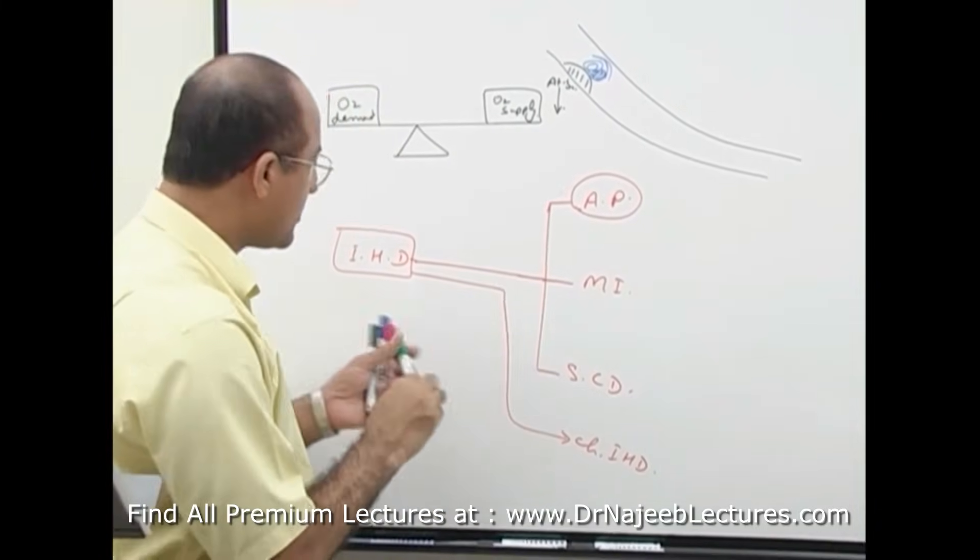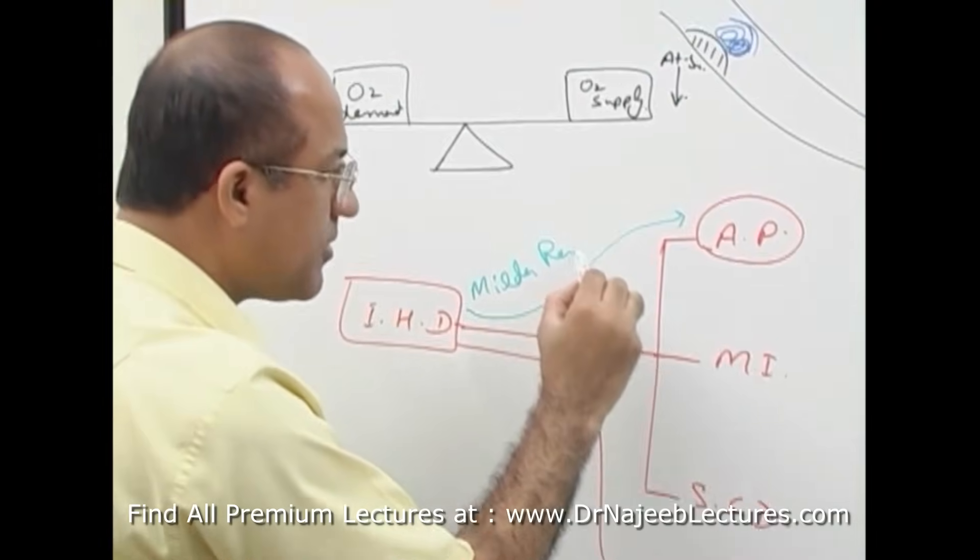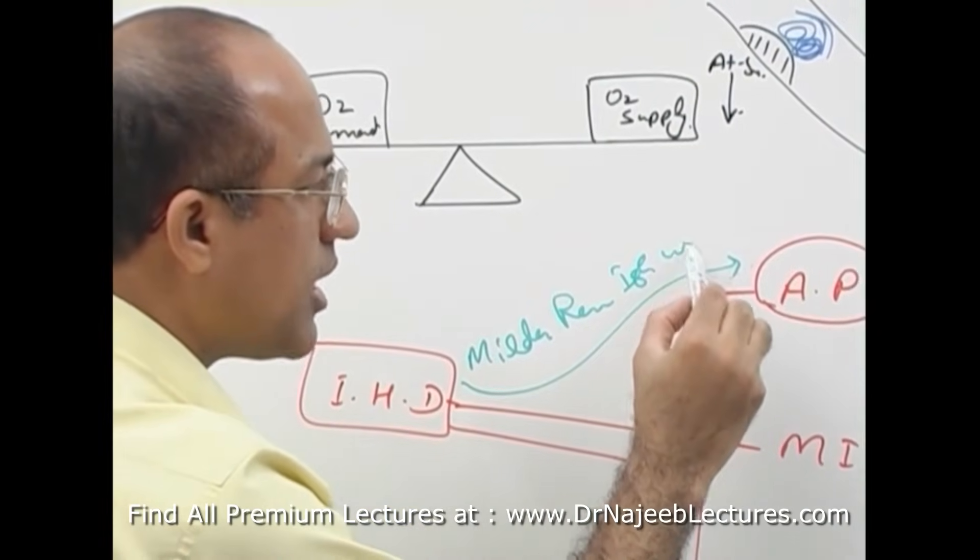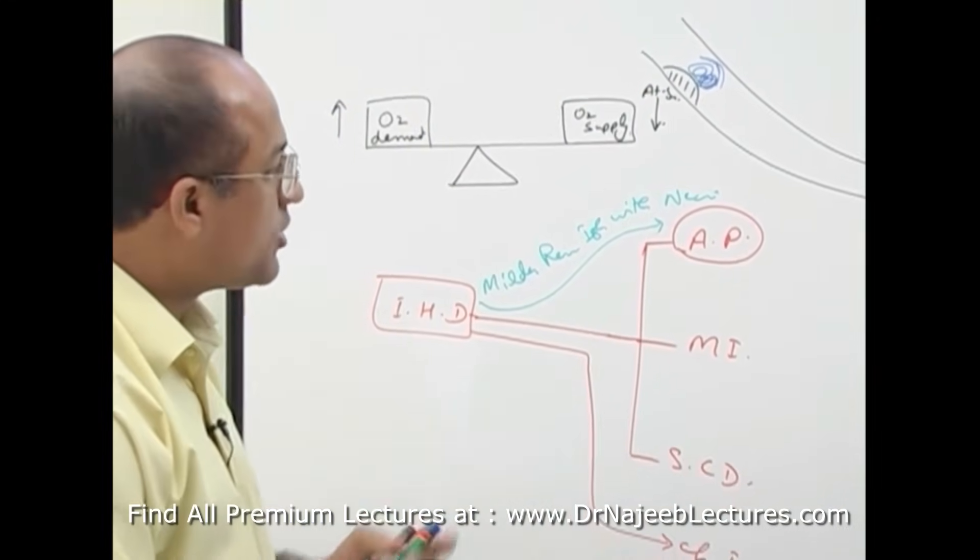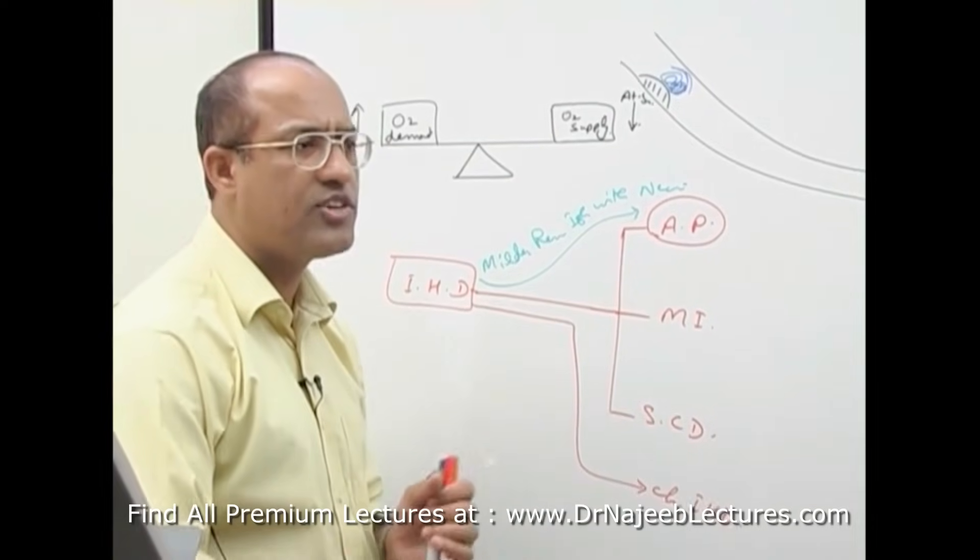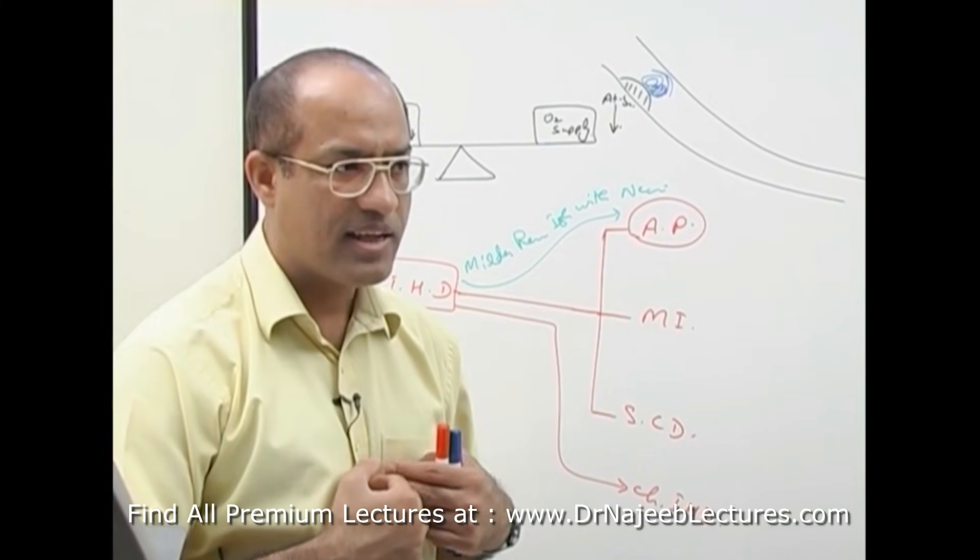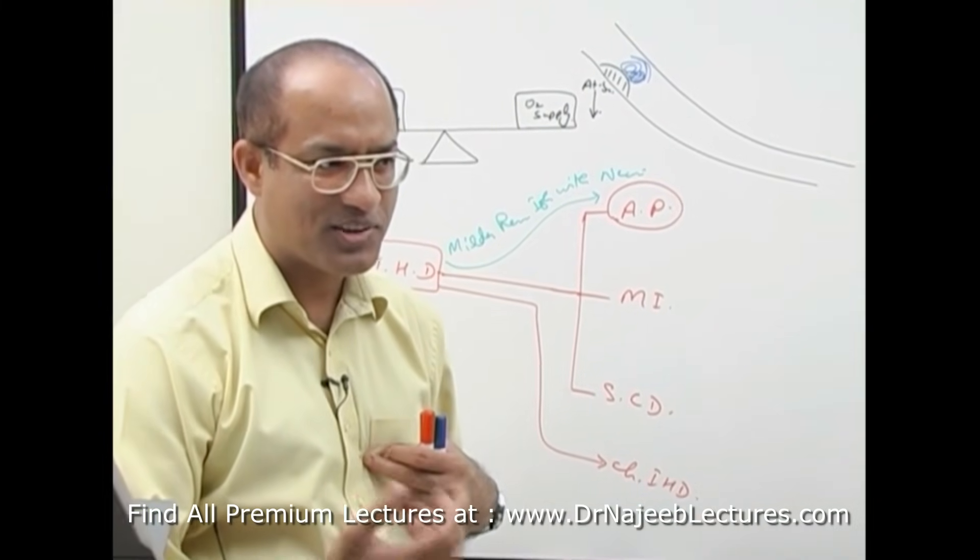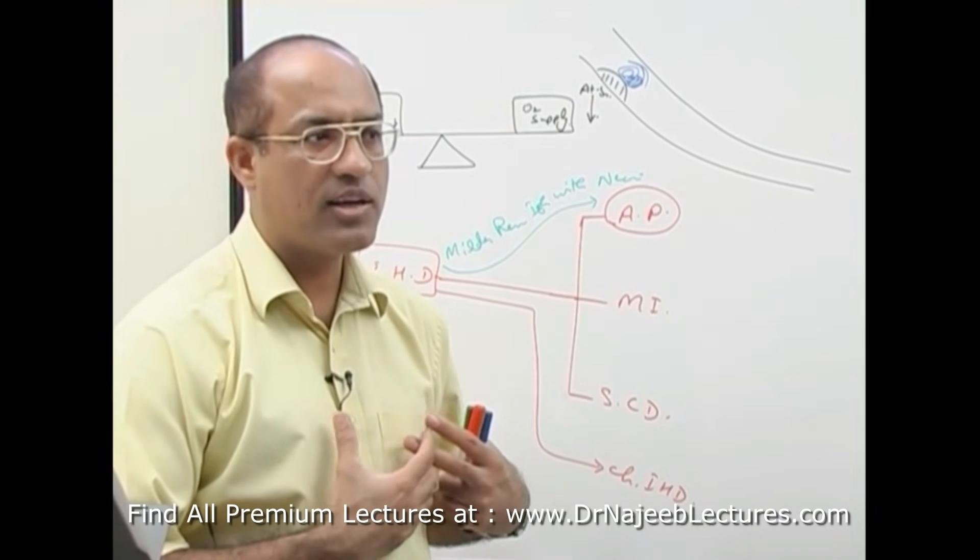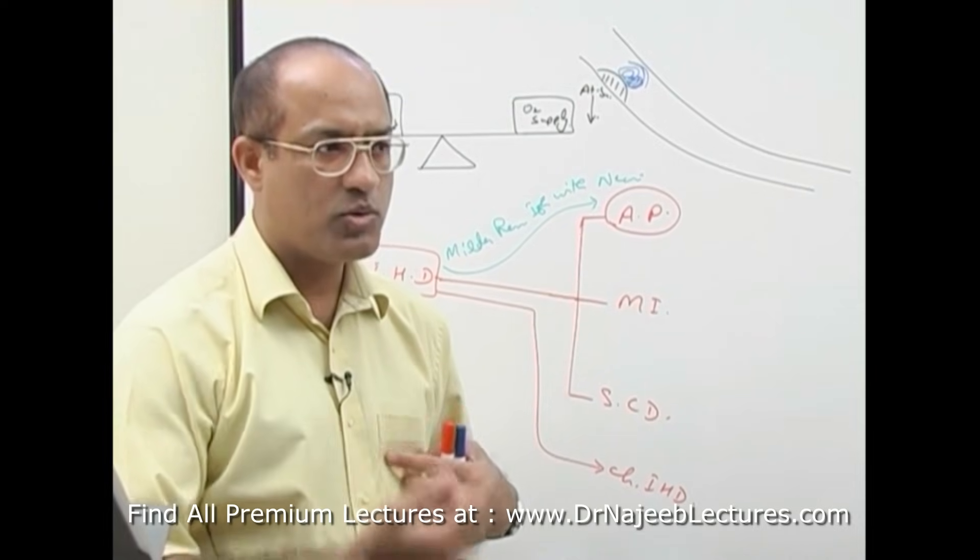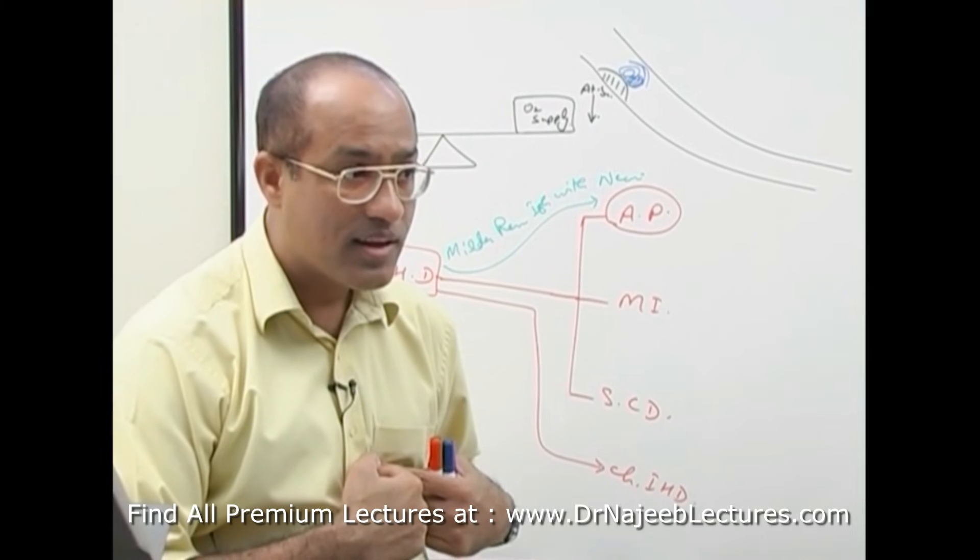What is angina pectoris? This is a situation where there is milder reversible ischemia without necrosis of myocardium. That is called angina pectoris. Usually in angina pectoris there is central chest pain. What are the characteristics of angina pain? Classical angina pain is that there is substernal or central chest pain which is dull, which is diffuse.